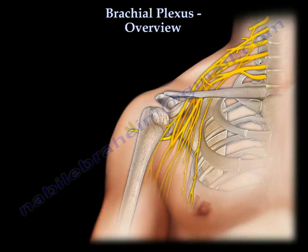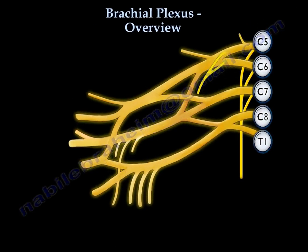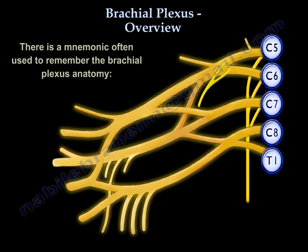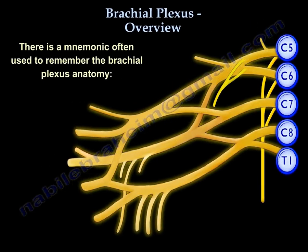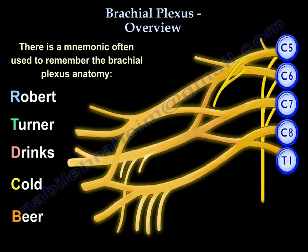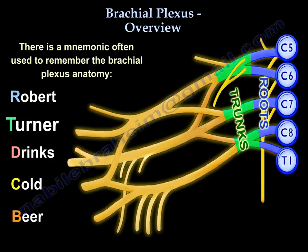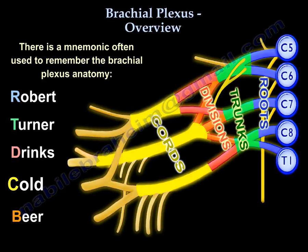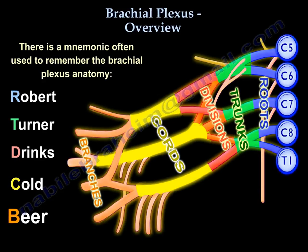Brachial plexus anatomy is a very difficult task. I'm going to try to make it easy for all of us. People use the mnemonic 'Robert Turner Drinks Cold Beer.' Robert is the roots, Turner is the trunks, Drinks is the divisions, Cold is the cord, and Beer is the branches.